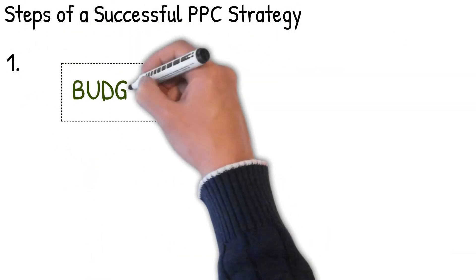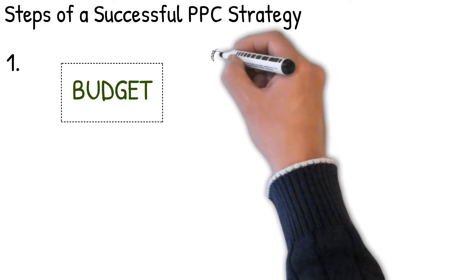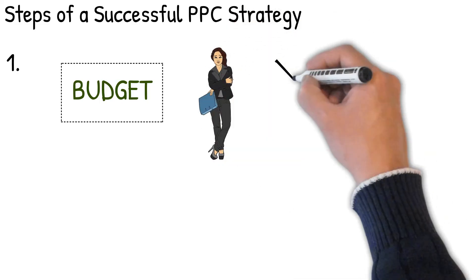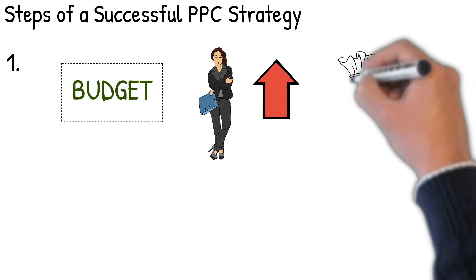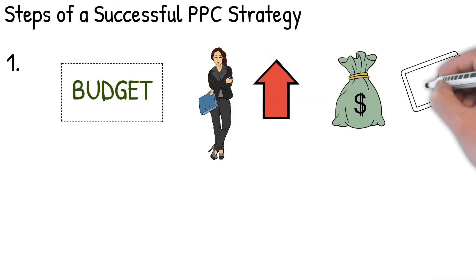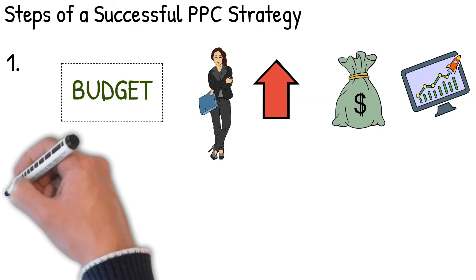Steps of a successful pay per click strategy. Clearly set your desired budget. Set a budget that rhymes with your goal in advertising. Some entrepreneurs market for the purposes of promoting their brand, others generate profits while others to increase traffic on their sites.